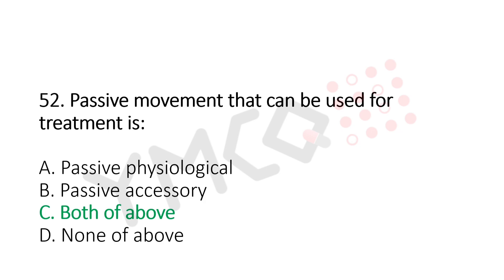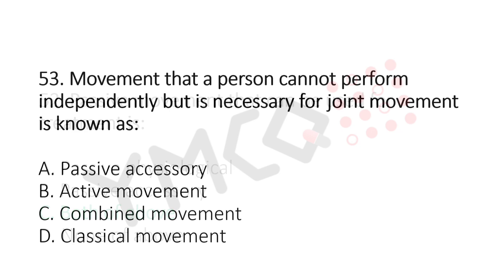Question number 53: Movement that a person cannot perform independently, but is necessary for joint movement, is known as: Option A, passive accessory; Option B, active movements; Option C, combined movement; Option D, classical movement. The answer is Option A, passive accessory.